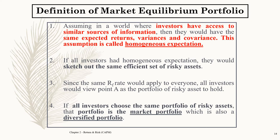Next, you need to know the Market Equilibrium Portfolio. It assumes that in this world, investors have access to similar sources of information, so they would have the same expected return, variance, and covariance. This assumption is called homogeneous expectation. When all investors have homogeneous expectations, they would sketch out the same efficient set of risky assets.